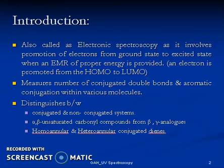It is called electronic spectroscopy as it involves the promotion of electrons from ground state to excited state when electromagnetic radiation of proper energy is provided. A particular wavelength can only bring about that specific shift in the electron. When an electron is promoted from HOMO to LUMO, it has entered an excited state. We will understand HOMO (highest occupied molecular orbital) and LUMO (lowest unoccupied molecular orbital) in the next slide.